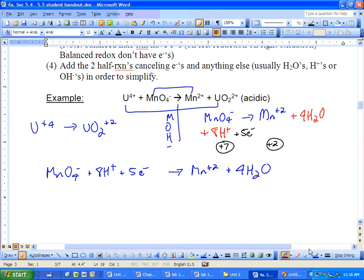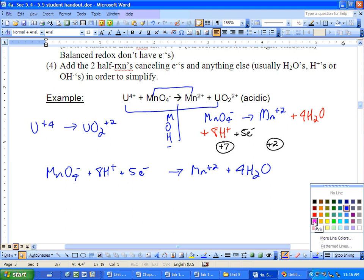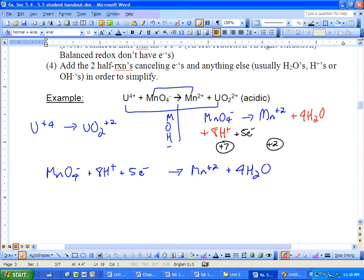I'm now going to do the same to the uranium. 1 U, 1 U, done. 2 O's, add 2 waters. Mess up my H's, add 4 H+. Total charge on this side is +4. Total charge on this side is 2 and 4 is +6. So I'm going to make the 6 go down to the 4, so I'm going to add 2 electrons.